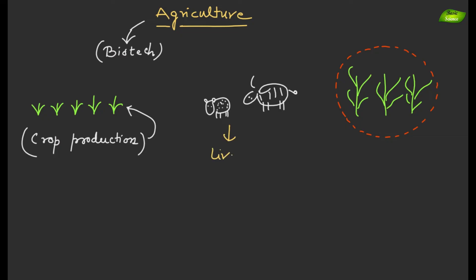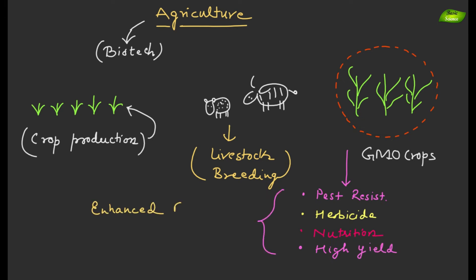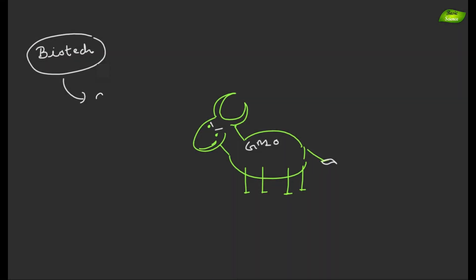In agriculture, biotechnology has transformed crop production and livestock breeding. Genetically modified crops engineered for traits such as pest resistance, herbicide tolerance and improved nutritional content have contributed to higher yields, reduced pesticide use and enhanced food security.